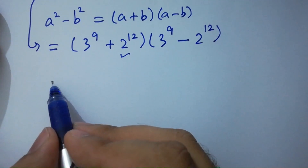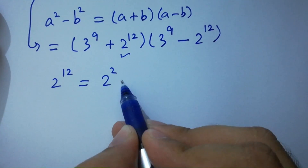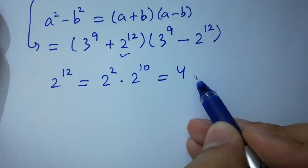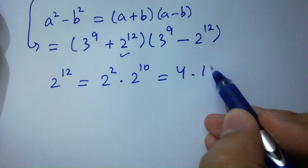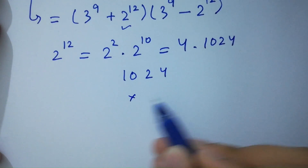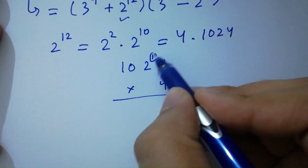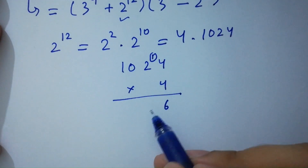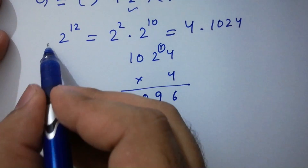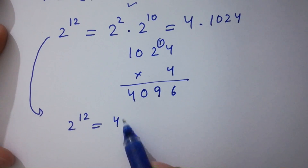First, 2 to the power 12 equals 2 squared times 2 to the power 10 — that is 10 plus 2 gives 12. 2 times 2 is 4, and 4 times 2 to the power 10, which is 1024. So 1024 times 4: 4 times 4 is 16, carry 1; 4 times 2 is 8, plus 1 is 9; 4 times 0 is 0; 4 times 1 is 4. So 2 to the power 12 equals 4096.